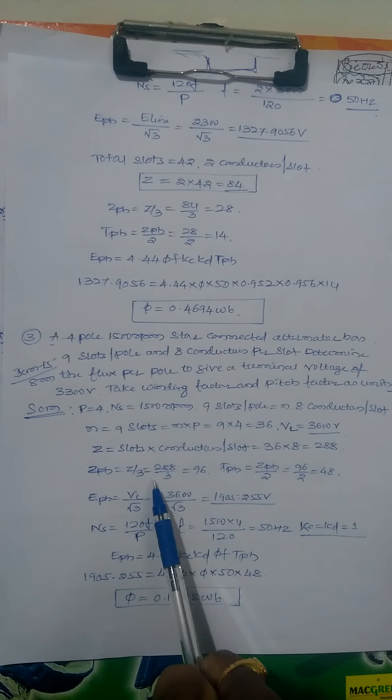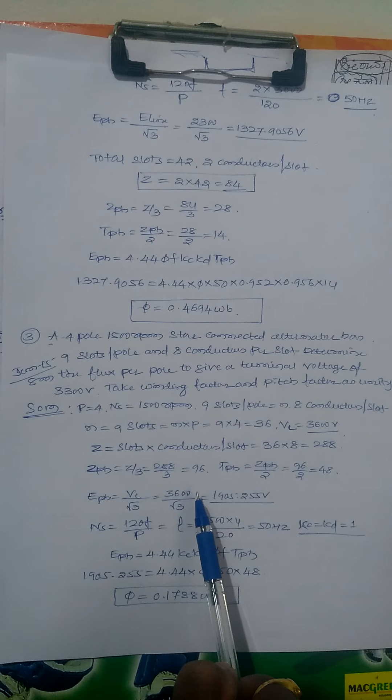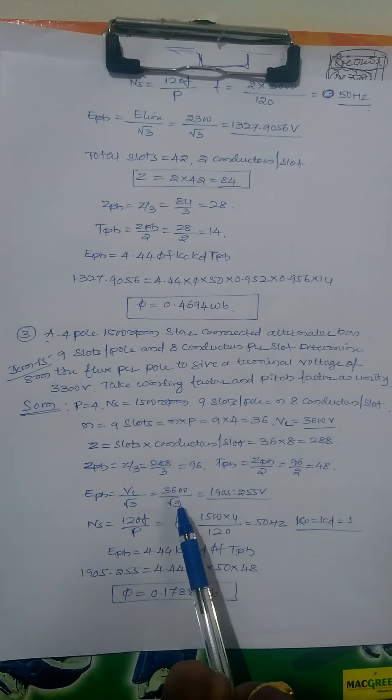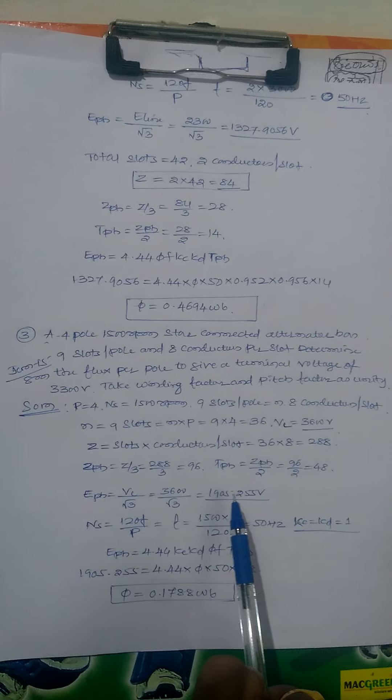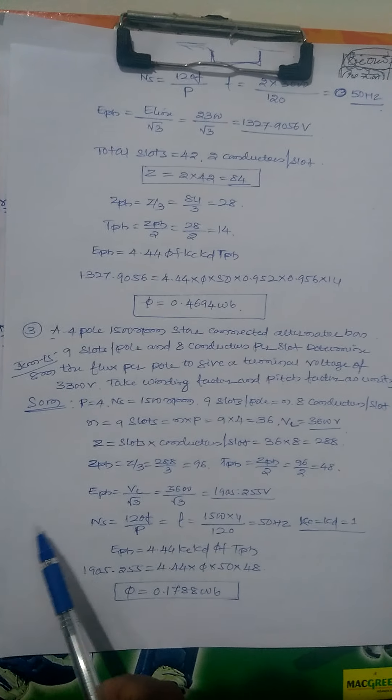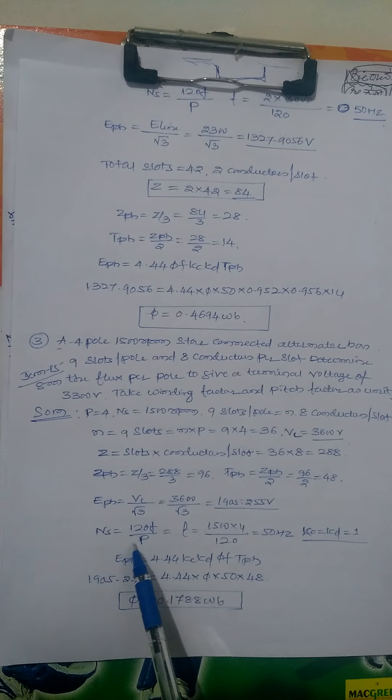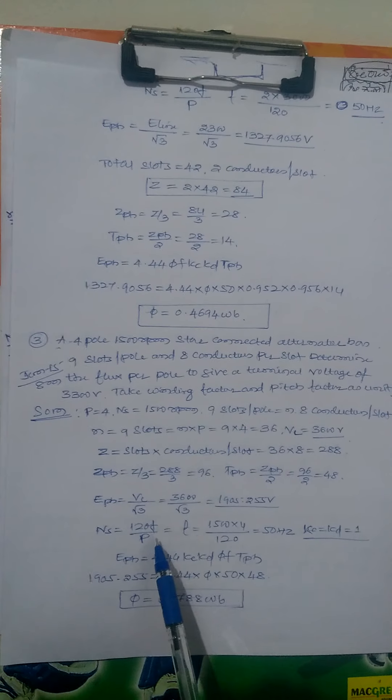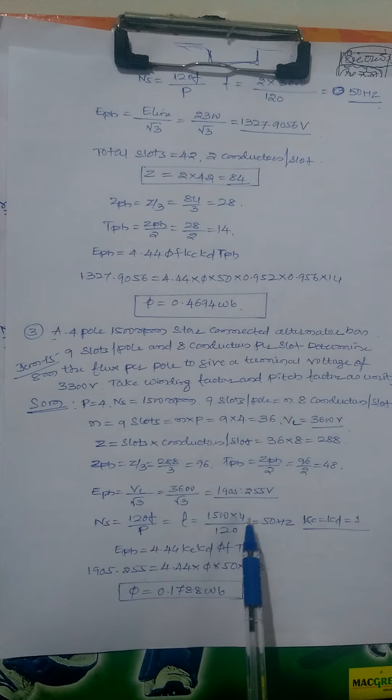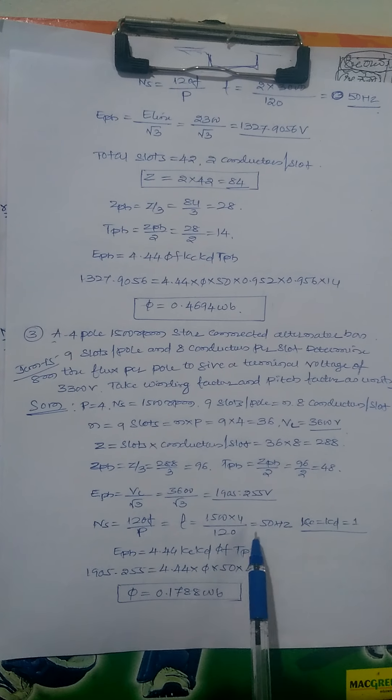E phase equals line voltage by root 3: 3300 divided by root 3, that is 1905.255 volts. Next, calculate NS. NS equals 120 F by P, so F equals 1500 into 4 divided by 120, that is 50 hertz.